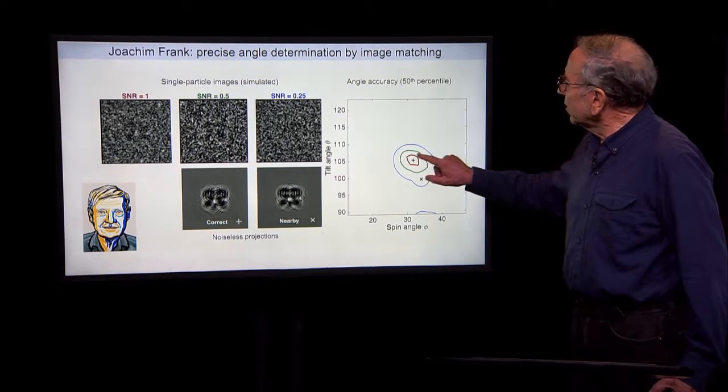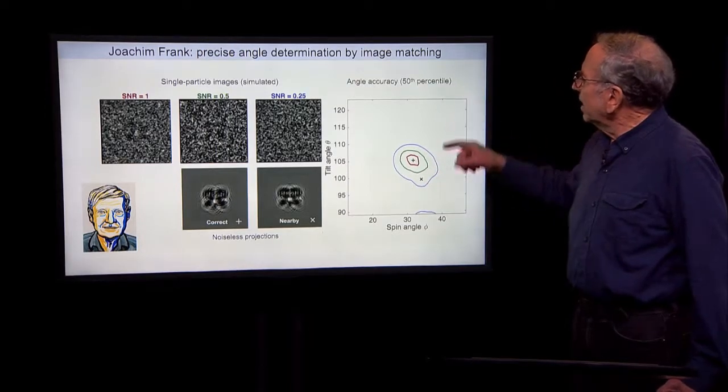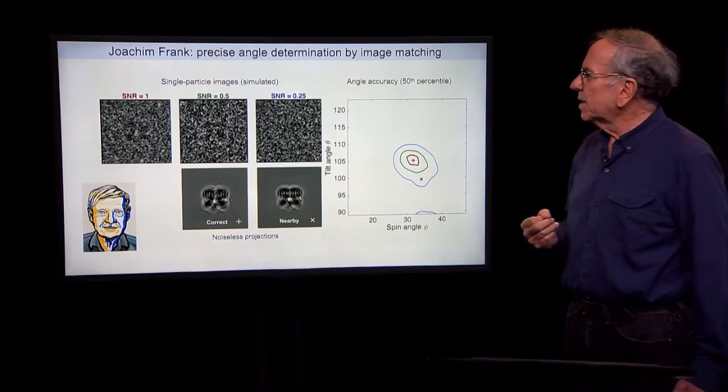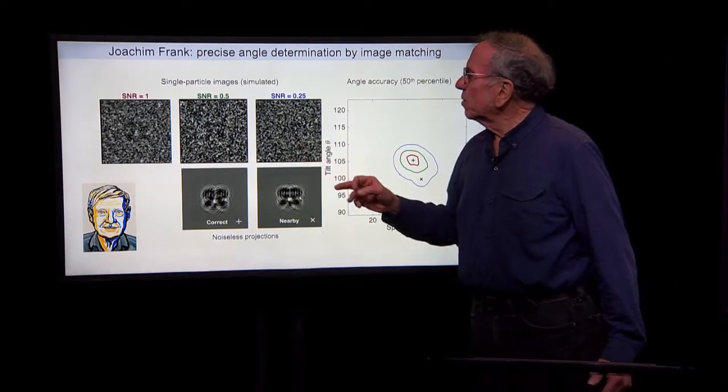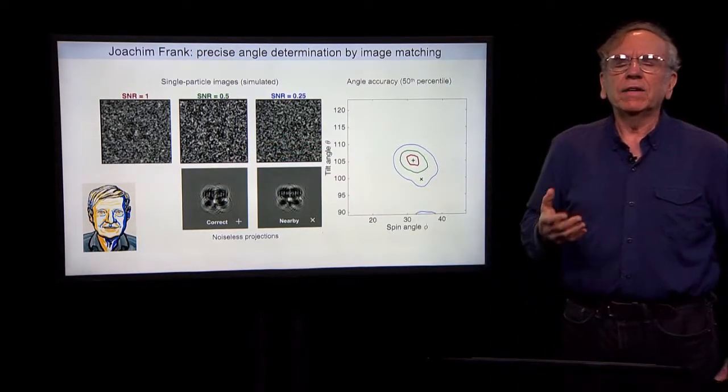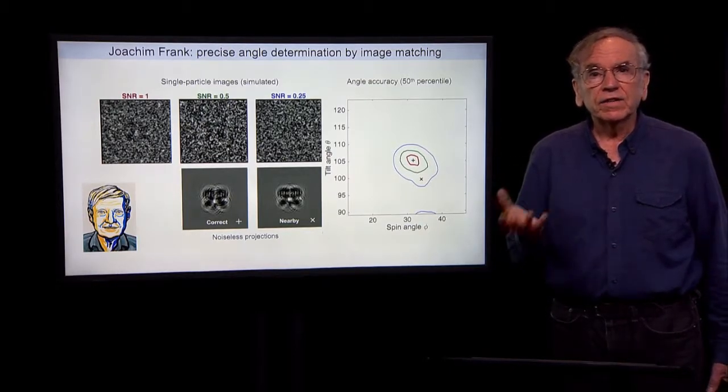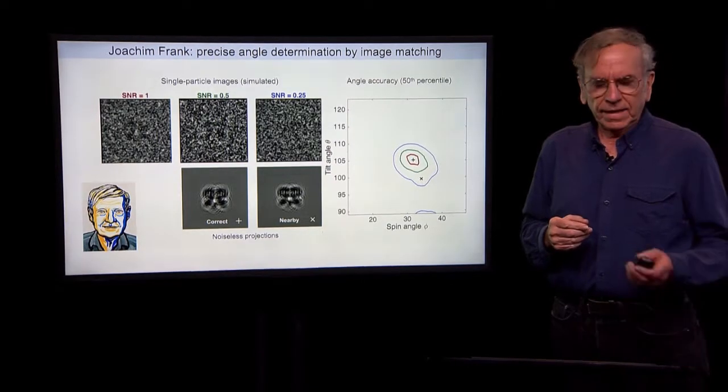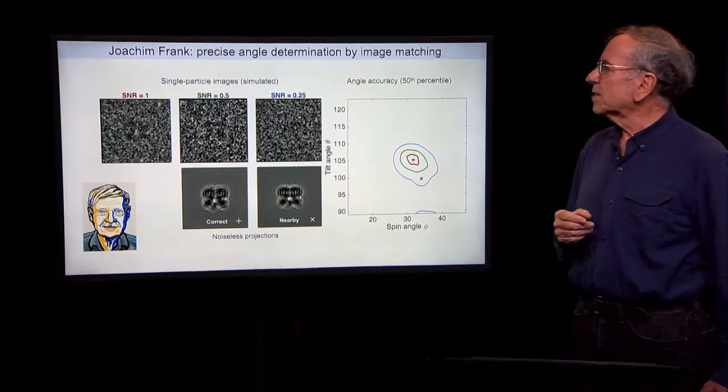And you can see how precise this kind of projection matching can be. So if we take our original image with a given signal-to-noise ratio, we can easily distinguish the correct from a nearby projection of the three-dimensional object represented by these two points. And this SNR of 1, the experimental signal-to-noise ratio, gives a confidence interval that's within a couple degrees. If the signal-to-noise ratio goes down, that is, if somehow the imaging process is not quite as good and there's more noise, there's more uncertainty in the determination of those angles.